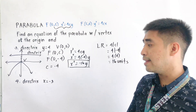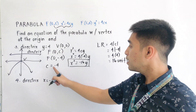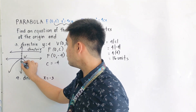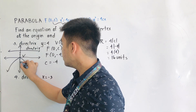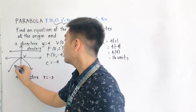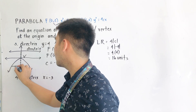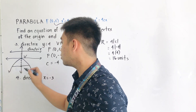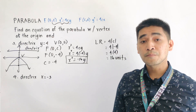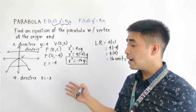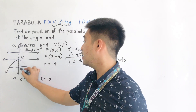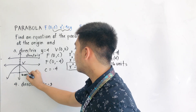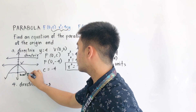So let us now try to draw the latus rectum. The focus is located at (0, negative 4). This is our latus rectum. The latus rectum will pass through our parabola and the focus. So the length of the latus rectum is 16 units.